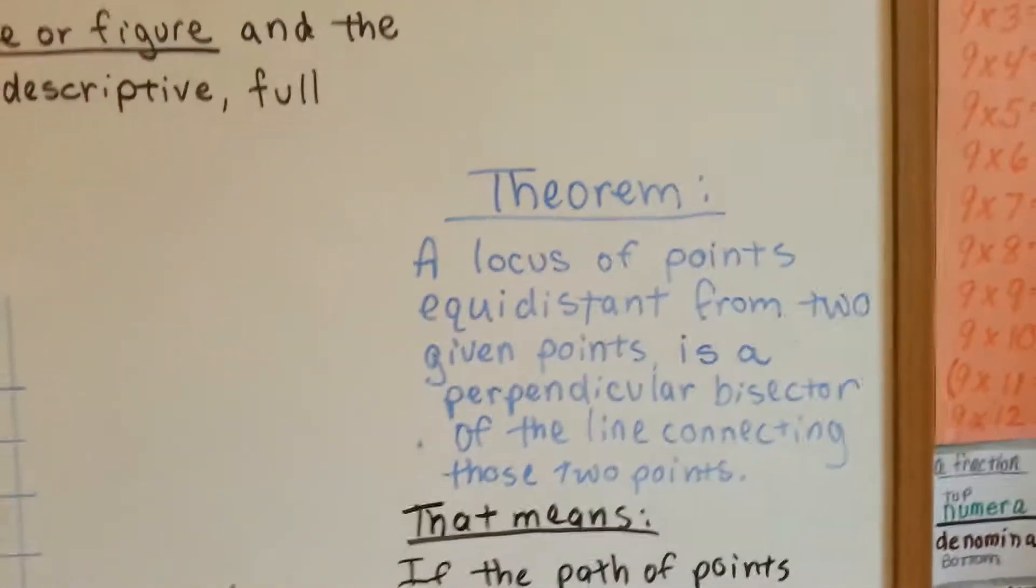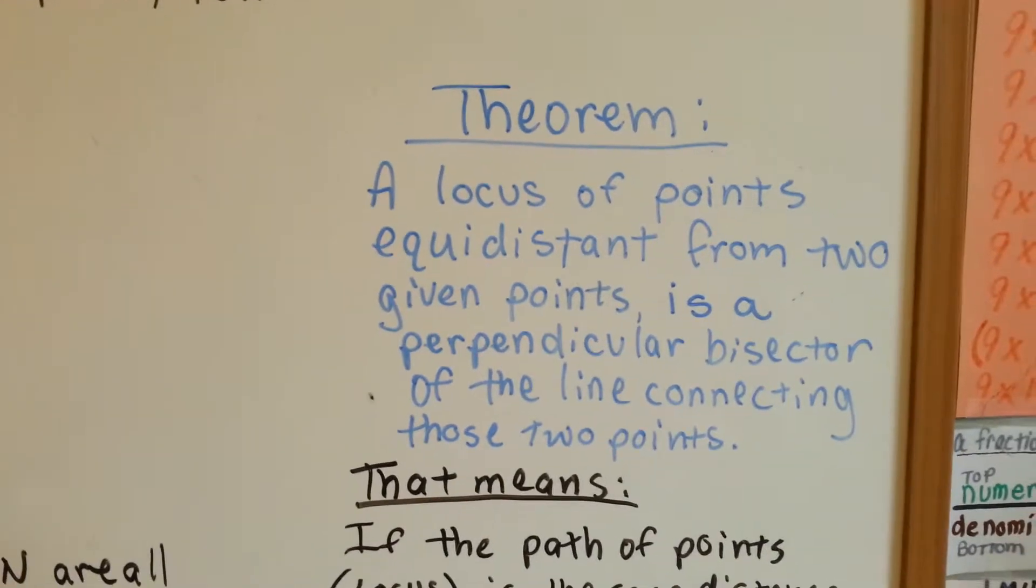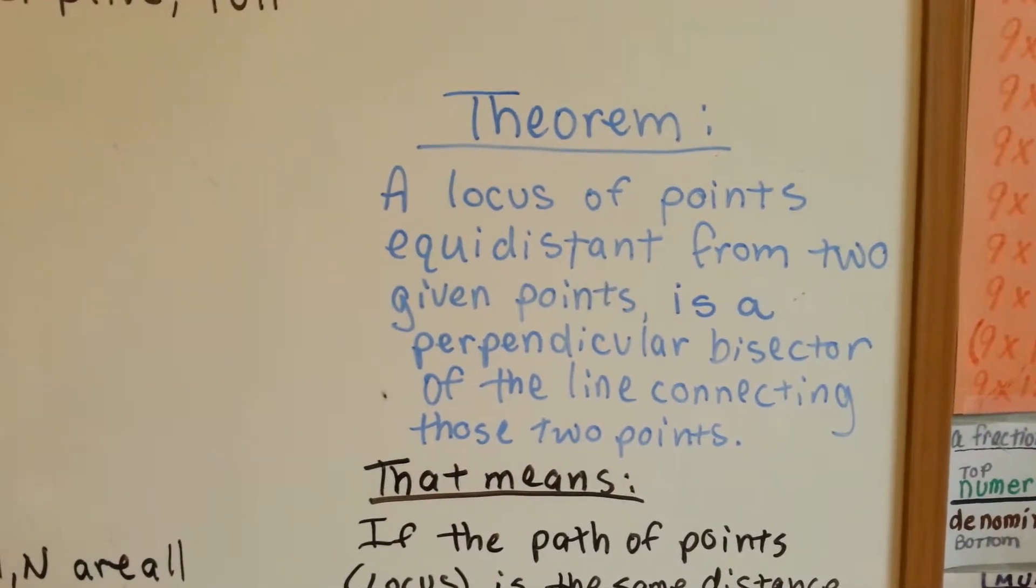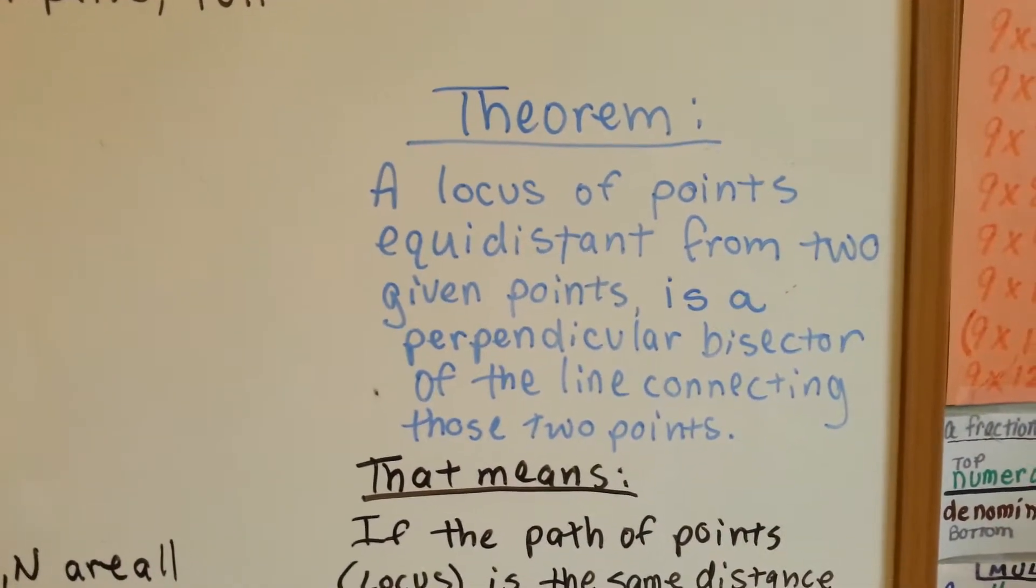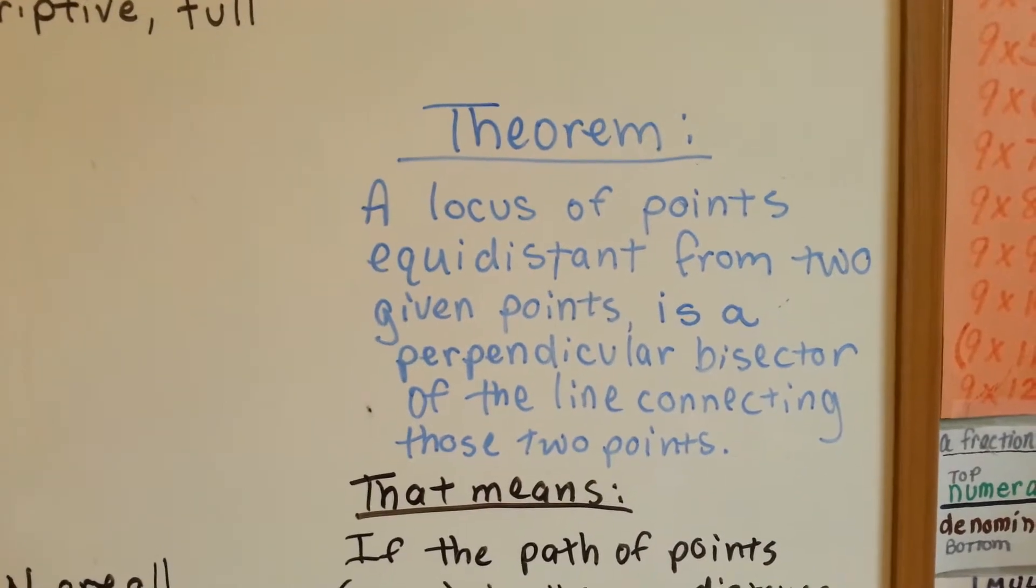We have a theorem. A locus of points equidistant from two given points is a perpendicular bisector of the line connecting those two points.